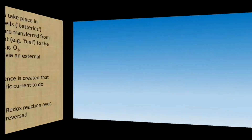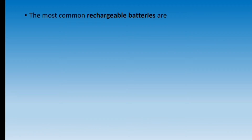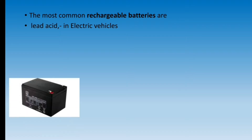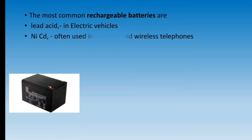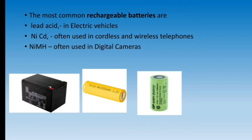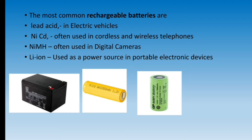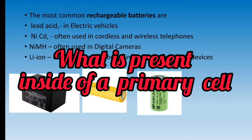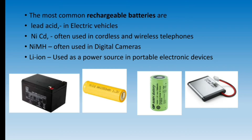Once the cycle of redox reactions is over, it cannot be reversed — that's why we cannot recharge primary batteries. The most common rechargeable batteries are: first, lead acid battery, used in electric vehicles; second, nickel cadmium battery, often used in cordless and wireless telephones; third, nickel metal hydride (NiMH) battery, often used in digital cameras; and fourth, lithium-ion battery, used as a power source in portable electronic devices like mobile phones.